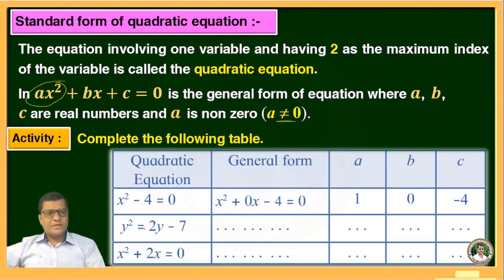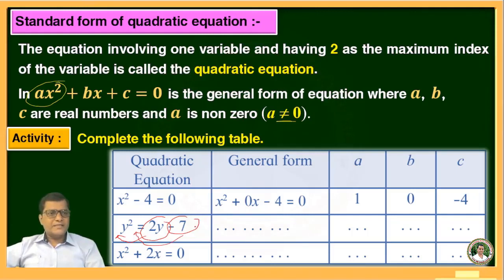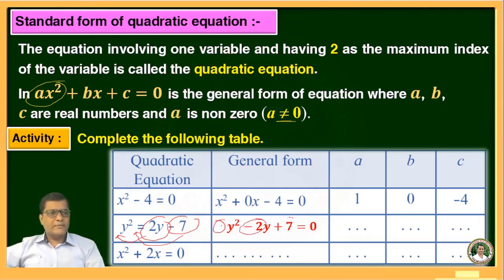The second equation is y² = 2y − 7. To write this in general form, transfer 2y to the left side and −7 becomes +7, leaving 0 on the RHS. We get y² − 2y + 7 = 0. Here, the value of a is 1, b is −2, and c is 7.